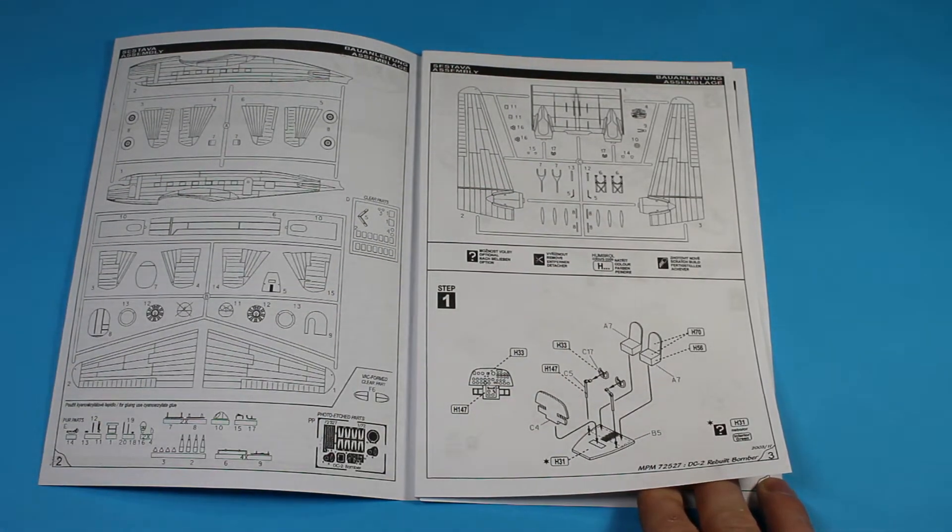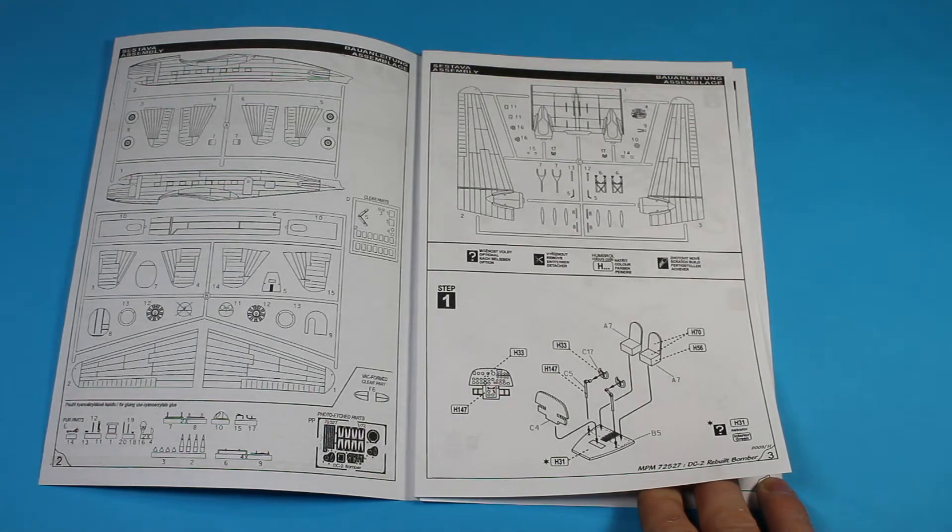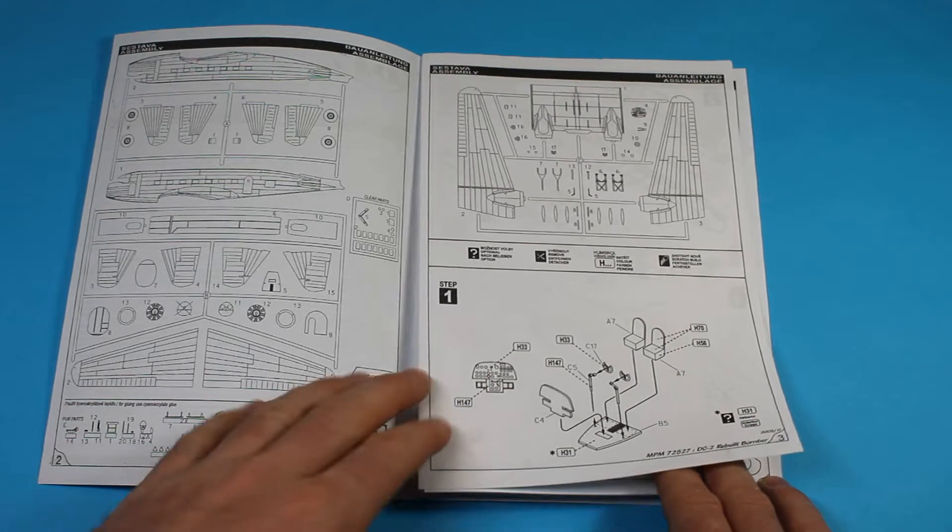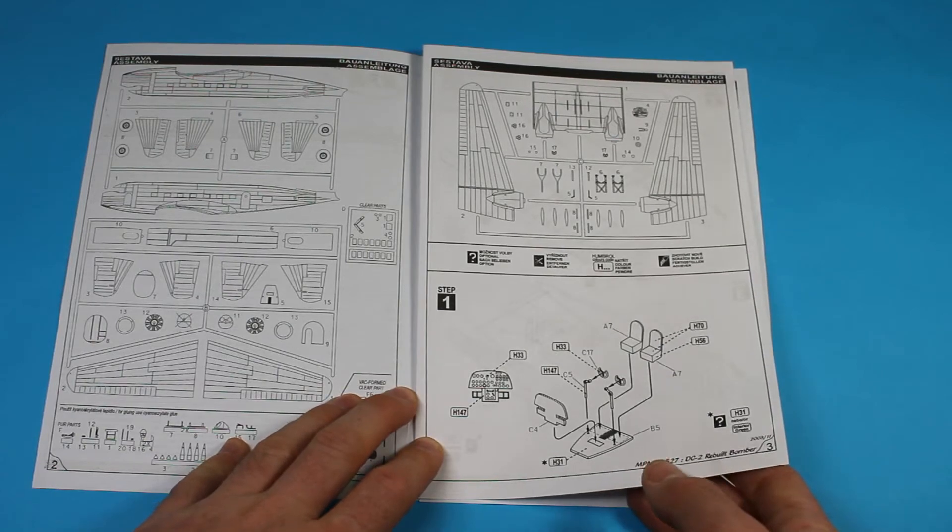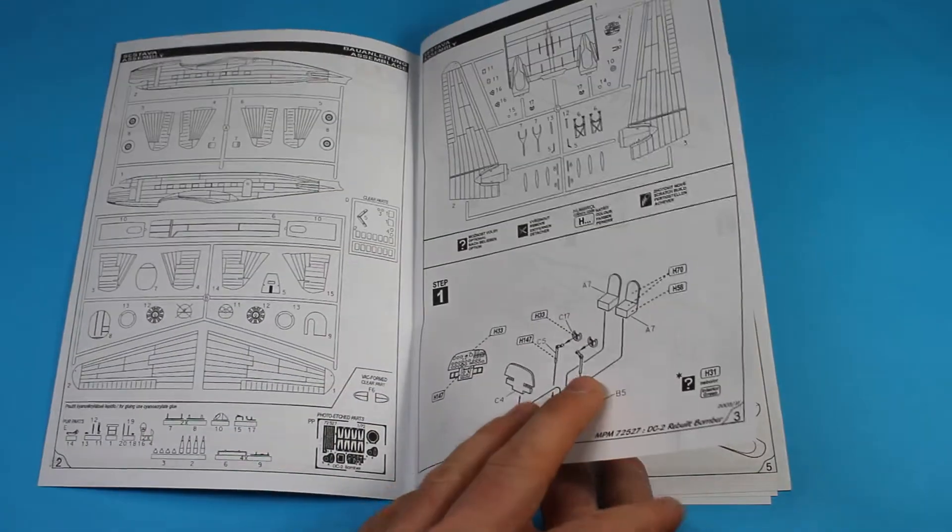There are three versions of this, I believe. You've got this one, and then the other two are two different marking options. Starting off, we're just going to run through here.